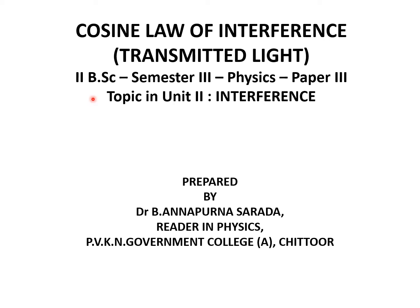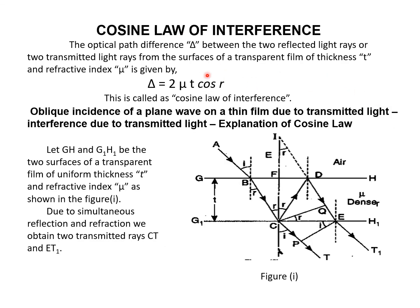In this lecture, I will explain about the cosine law of interference in the case of transmitted light. The optical path difference delta between two reflected rays or between two transmitted rays from the surfaces of a transparent film of thickness t and refractive index mu is given by delta equal to 2 mu t cos r. This delta equal to 2 mu t cos r is the cosine law of interference.